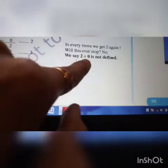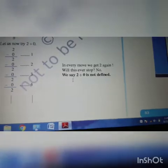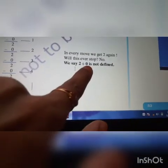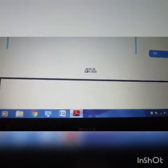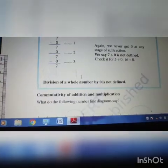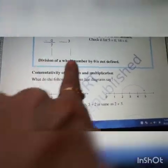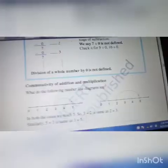Any whole number divided by 0 is not defined. So children, keep it in your mind. In denominator, 0 should not come. If it is coming, it is not defined. That you should keep it in your mind. That's what given here. Division of a whole number by 0 is not defined.